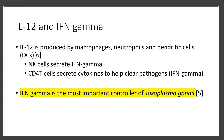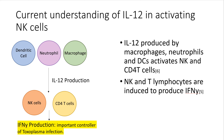That is why we are specifically looking at interleukin-12 and interferon gamma. IL-12 is a cytokine produced by macrophages, neutrophils, and dendritic cells. It stimulates both NK cells and CD4 T cells to secrete interferon gamma, which previous research has shown is the most important controller of Toxoplasma gondii. Dendritic cells, neutrophils, and macrophages produce IL-12 to stimulate NK cells as well as CD4 T cells, which bridge innate and adaptive immune responses, and these cells produce interferon gamma.